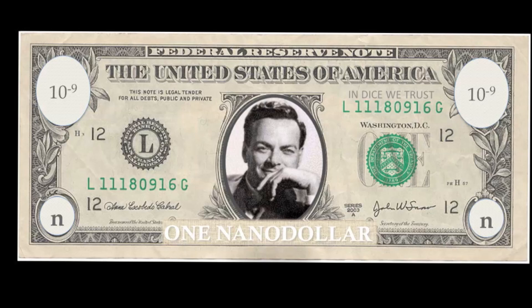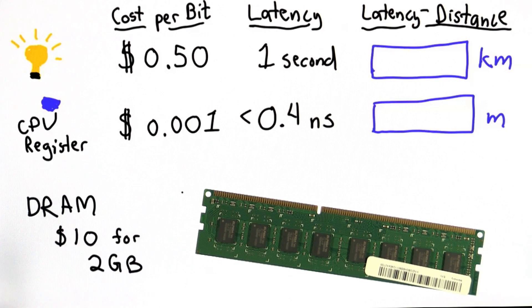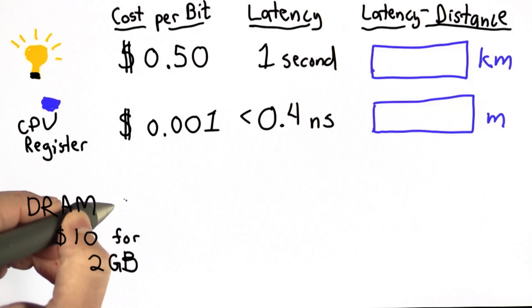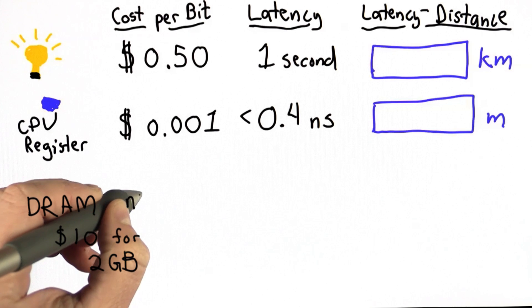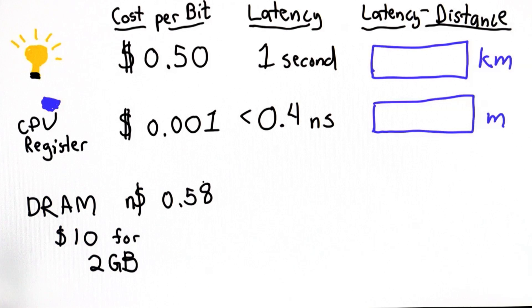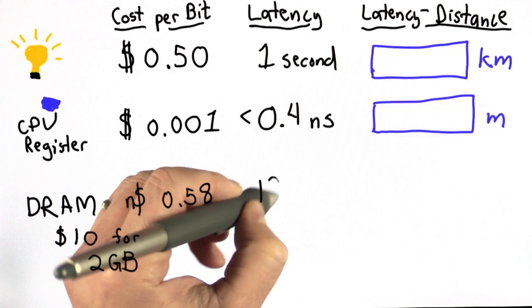So to measure the cost of DRAM in a meaningful way, we need a new kind of currency, which we'll call a nano dollar. A nano dollar is one billionth of a dollar. So if we have a billion nano dollars, that would make one dollar. It's money that's really not worth the paper that it's printed on, but it's a useful unit for measuring the cost per bit. So now we have a more useful currency for measuring the cost per bit of DRAM. And the cost of DRAM turns out to be, in terms of nano dollars, 0.58 nano dollars per bit. And we saw that latency for DRAM was 12 nanoseconds.